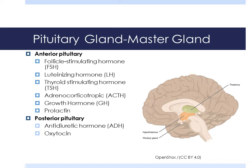Oxytocin, brand name Pitocin, is a very commonly used medication. It's often used to start labor when a pregnant woman is overdue. It's also used to keep a lagging labor going by increasing the frequency, duration, and intensity of uterine contractions.